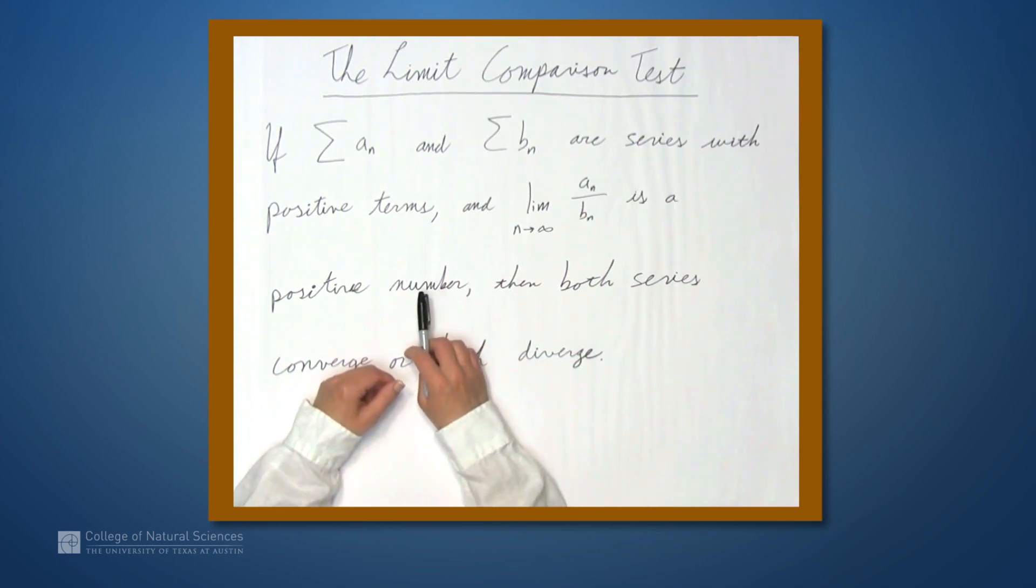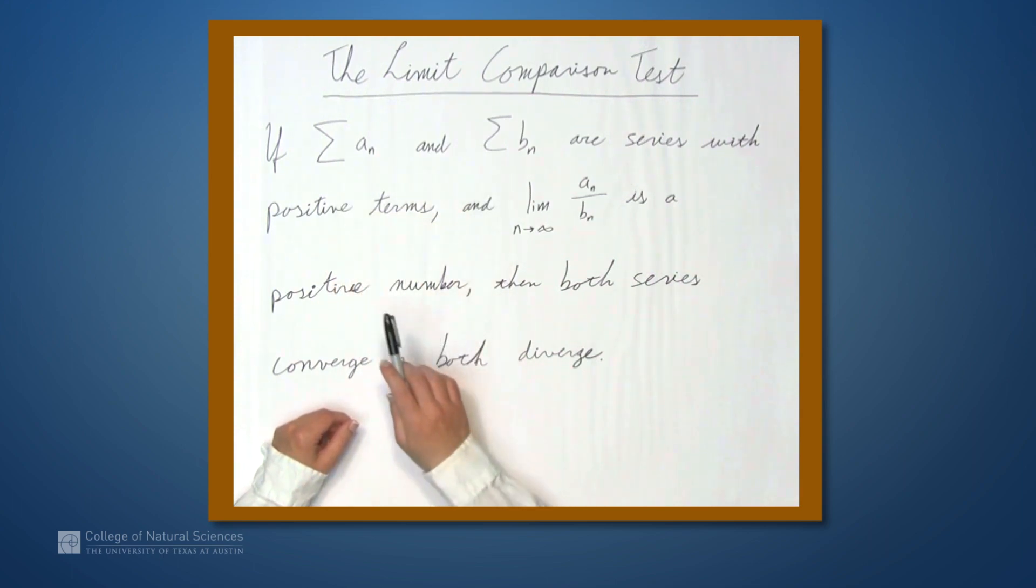In this video we're going to be talking about the limit comparison test. This test says that if you have two series with positive terms, and the limit of the ratio of the terms as n goes to infinity is a positive number, in other words it exists, is not infinity, and is greater than zero,